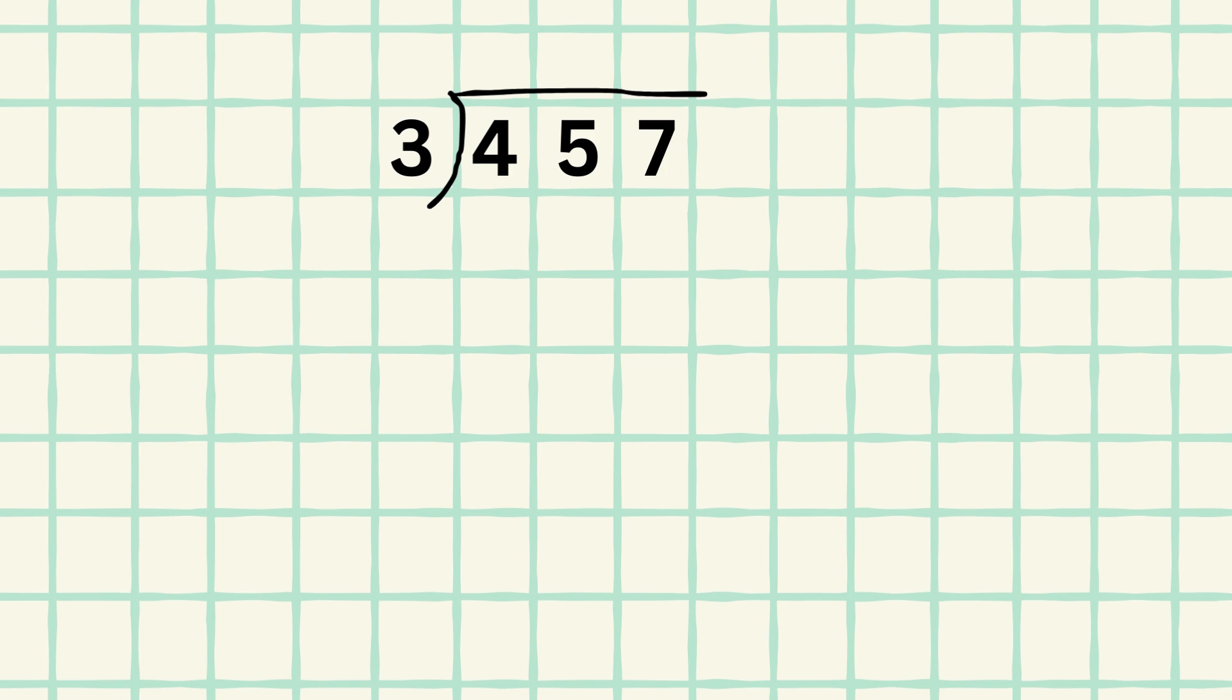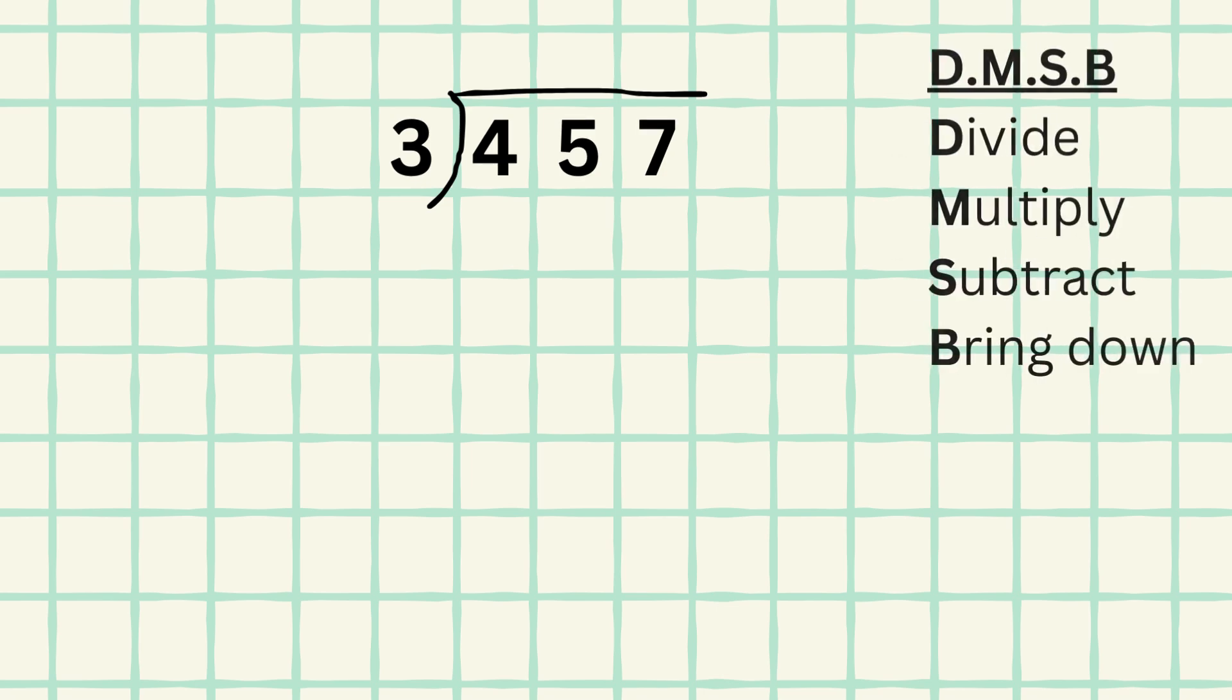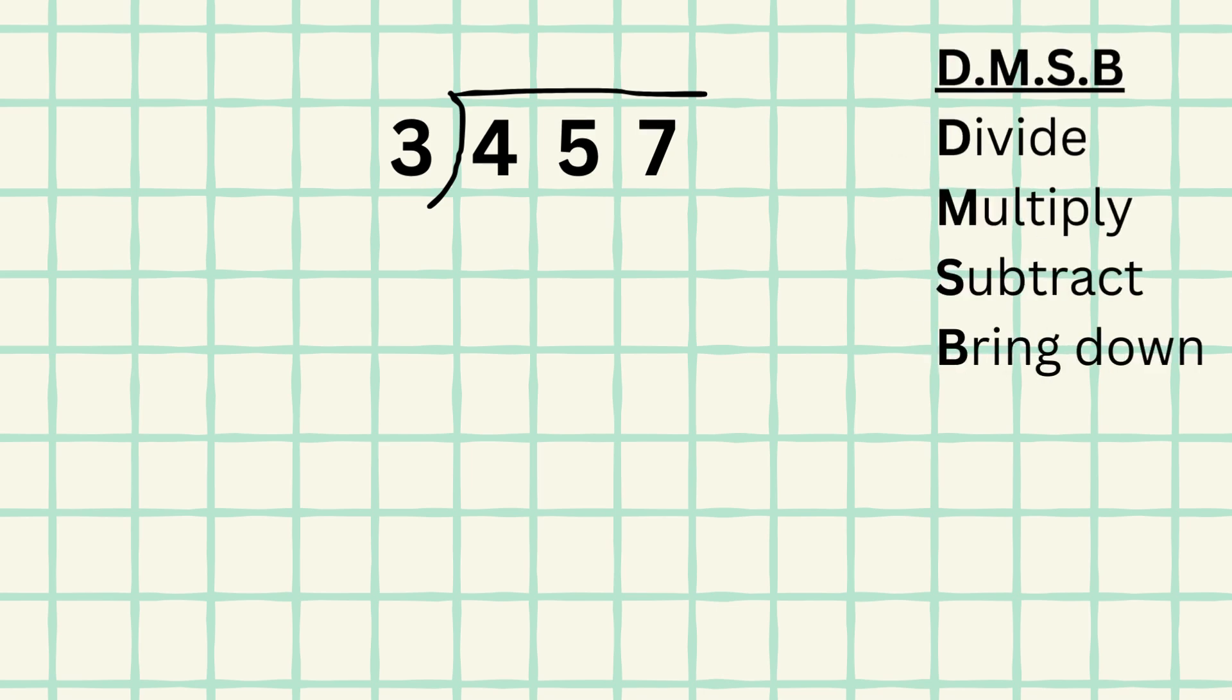And to make it very easy, we just follow our simple algorithm DMSB and always loop this around until there's no more digits left. Divide, multiply, subtract, bring down.